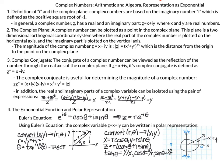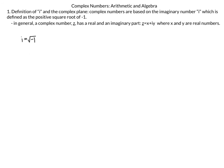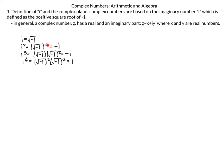That's it for our overview. Now we can go back and go through each topic in detail, starting with complex numbers. We'll start with the definition of i, which is defined as the positive square root of negative 1.